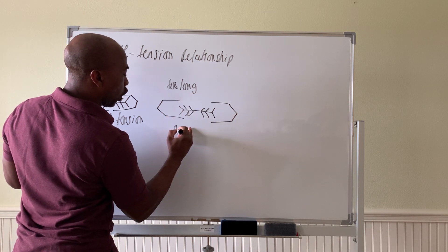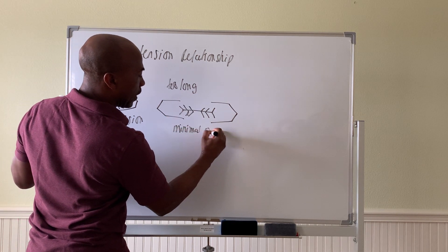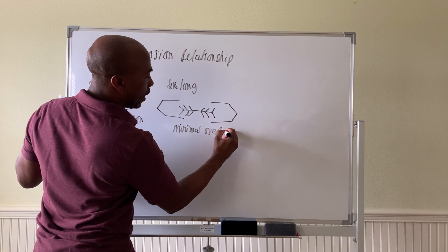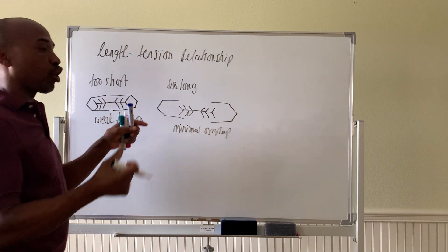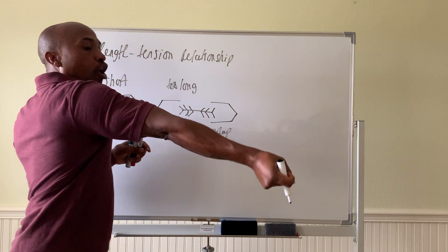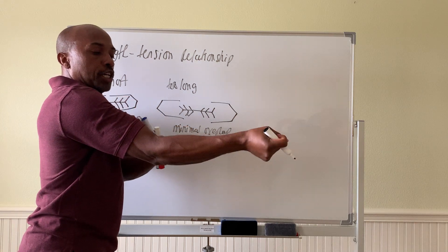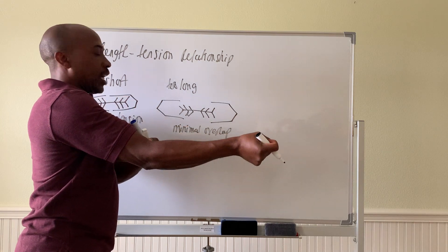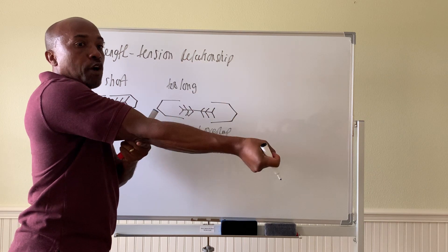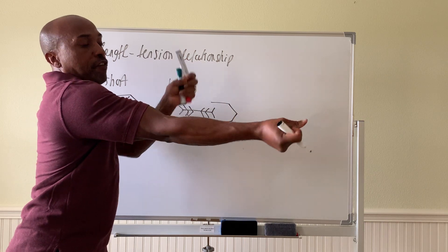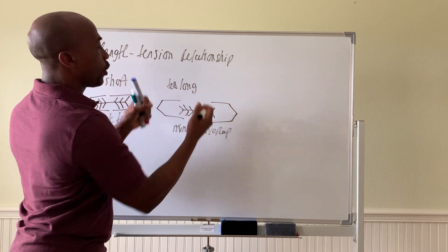When it's too long there is minimal overlap, which is also not good. Eventually it can get short enough to be in a good zone and generate power, but initially there's very low power because you can't form enough cross bridges to start to pull.